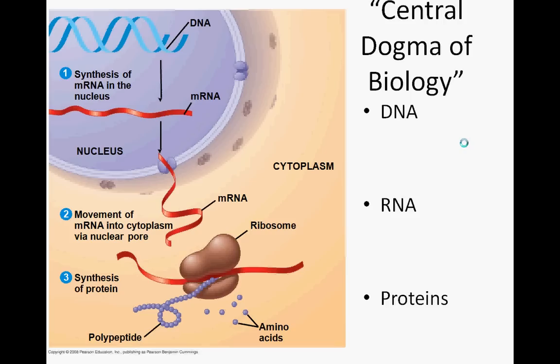DNA is housed in the nucleus. This is the source of all genetic information — this is where it's stored. If we want some function done in a cell, and we have a gene that encodes this function, here's the very scant outline of how that happens.